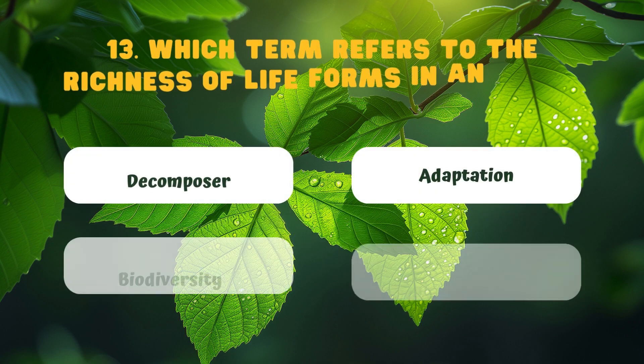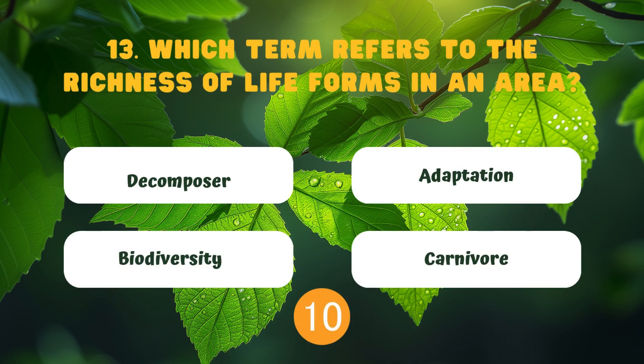Which term refers to the richness of life forms in an area? Decomposer. Adaptation. Biodiversity. Carnivore.